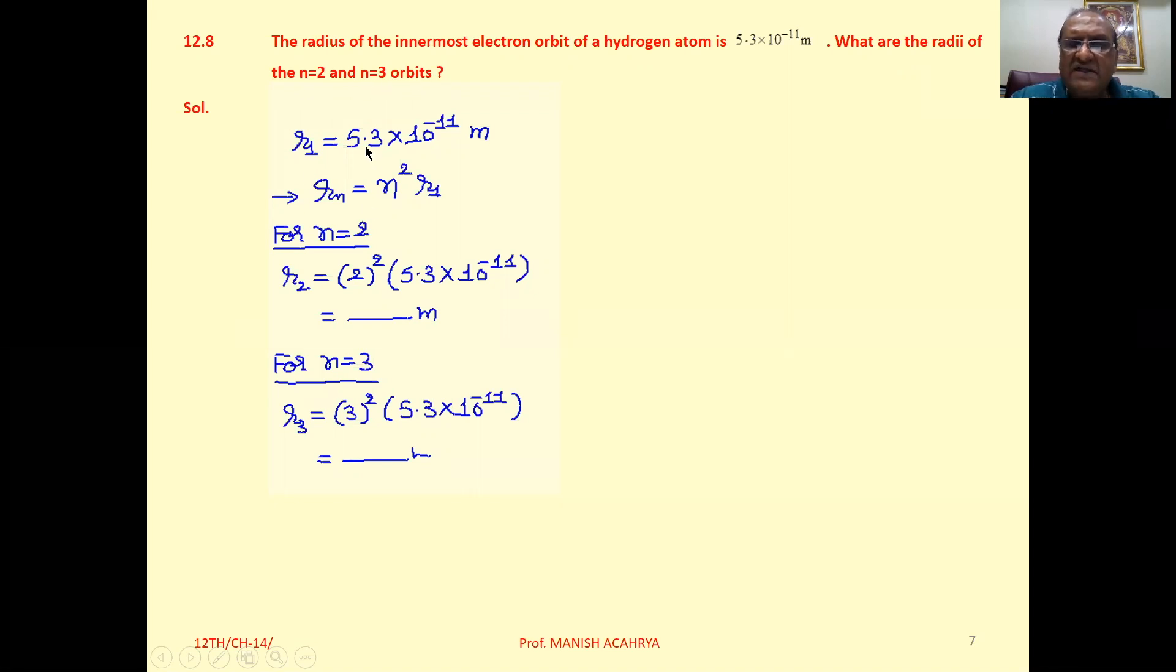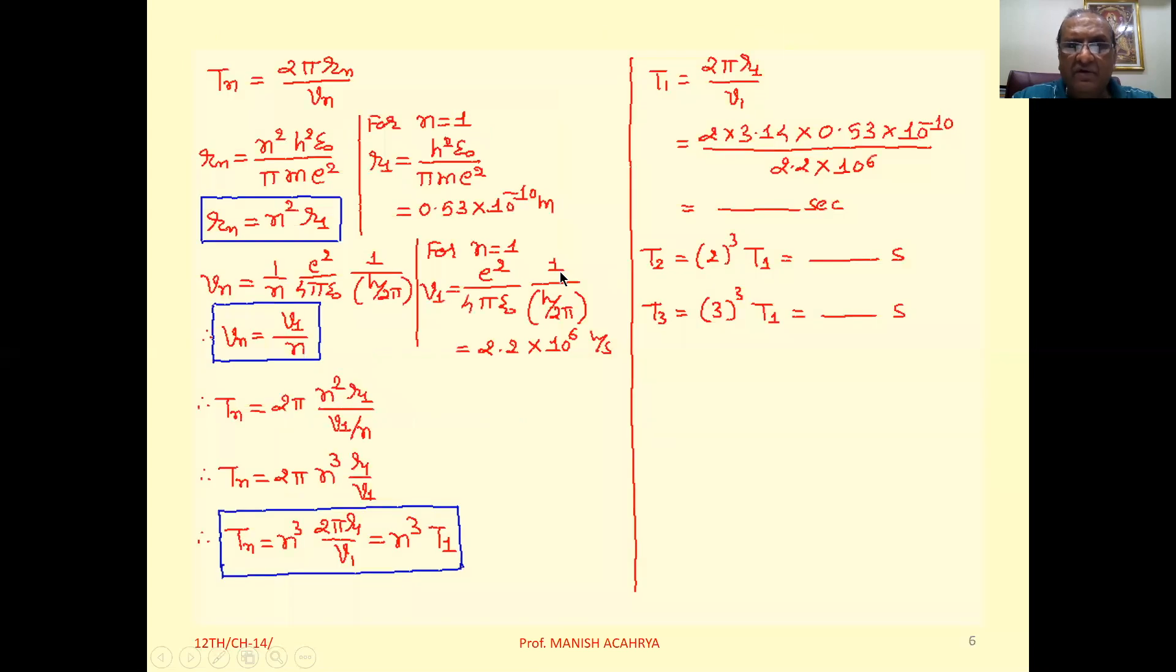So R1 is given to you, 5.3 × 10^-11 meter. And we know Rn = n² × R1. See here, we already proved Rn = n² × R1.